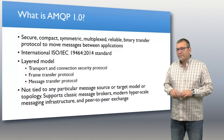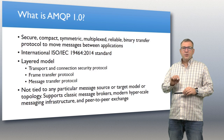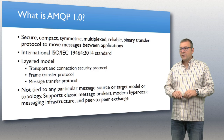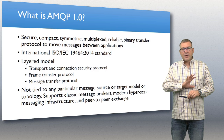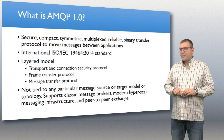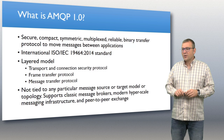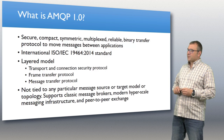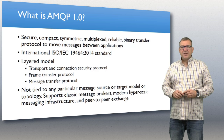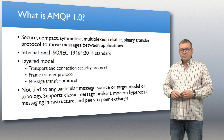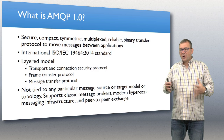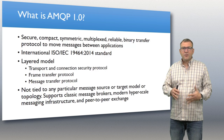So let's see what AMQP is. We're going to do this in six episodes — this is the first one providing an overview, and I'll explain the details of AMQP going down to the wire in coming episodes. AMQP is a secure, compact, symmetric, multiplexed, reliable, binary transfer protocol to move messages between applications. It's not tied to any particular message source, target model, or topology.